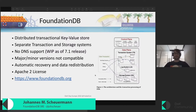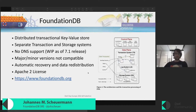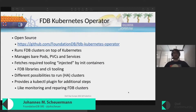FoundationDB offers automatic recovery and data redistribution, which means if any process, node, or fault domain receives a failure, the system is able to recover itself. Everything is open source under the Apache 2 license. The Kubernetes operator that we built at Apple is also open source, so you're welcome to take a look at it and try it out.